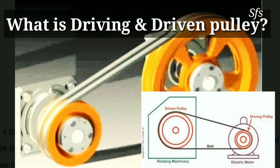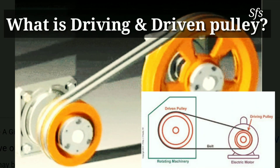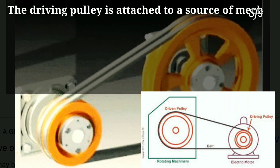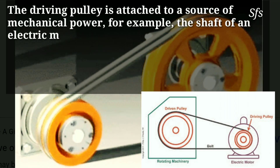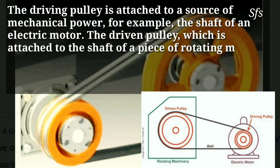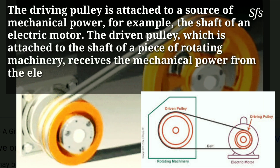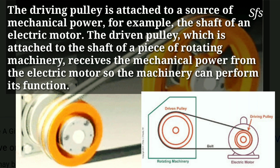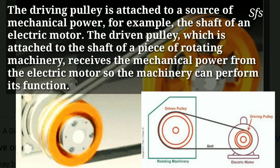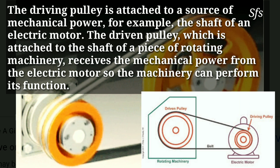Before calculating speed, we have to know about driving and driven pulleys in a belt drive system. The pulley which is connected to the power source — like the pulley connected to the motor in this diagram — is called the driving pulley. The pulley connected to the rotating machine is called the driven pulley. The driving pulley gives power to the driven pulley.